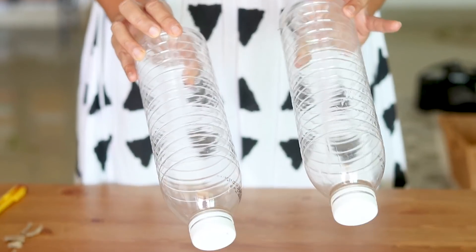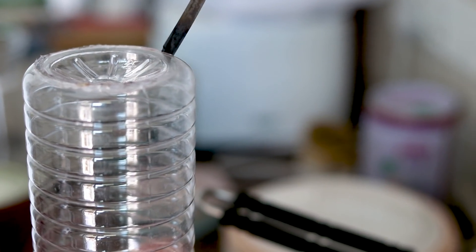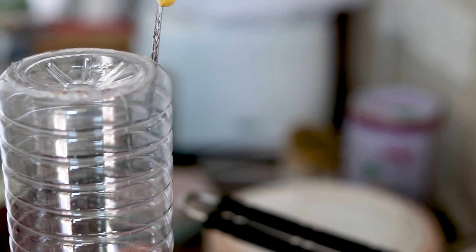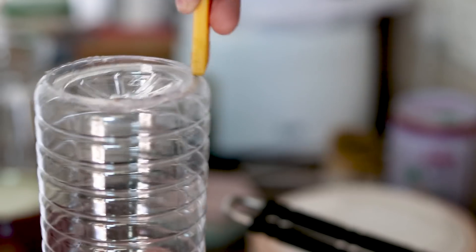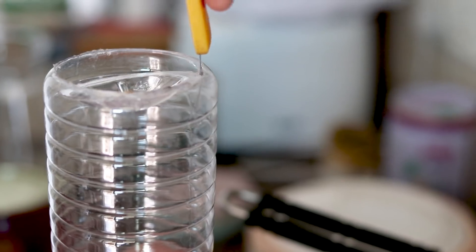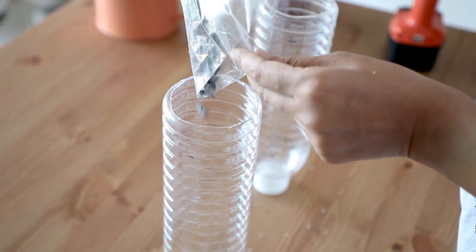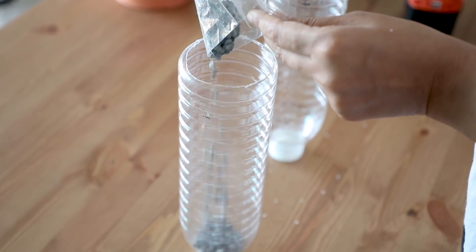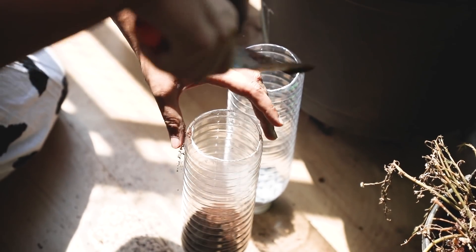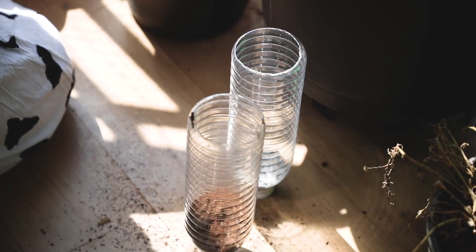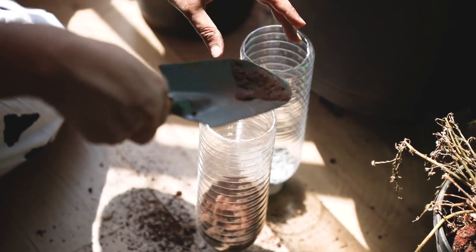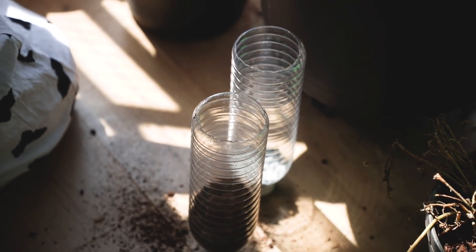For the third idea, cut a plastic bottle from the top. You can heat the cut edge for a cleaner finish. First, add some pebbles for drainage, then put the soil on top. If you don't have pebbles, just add the soil directly.